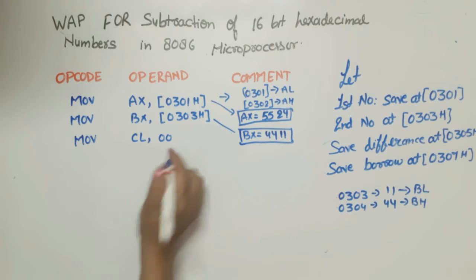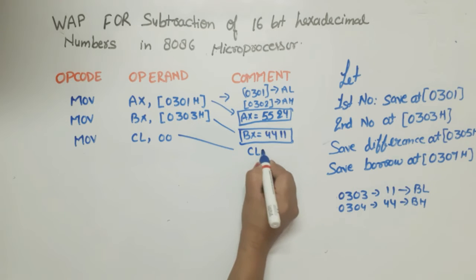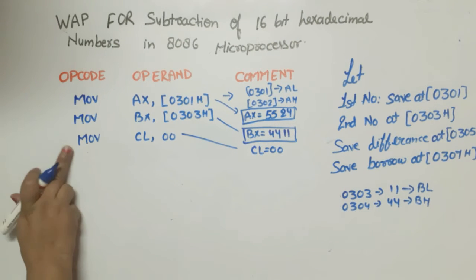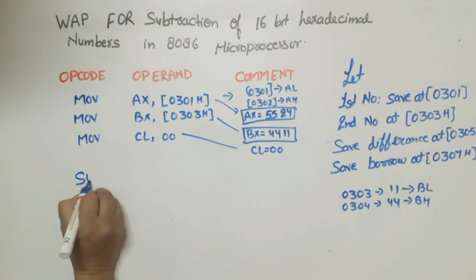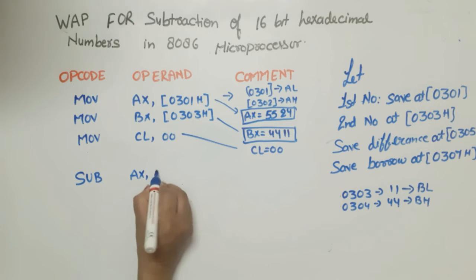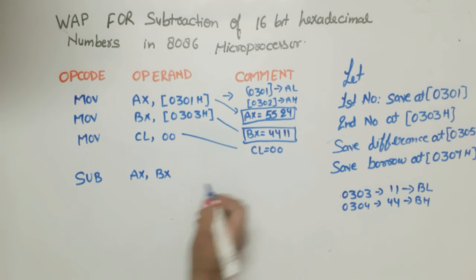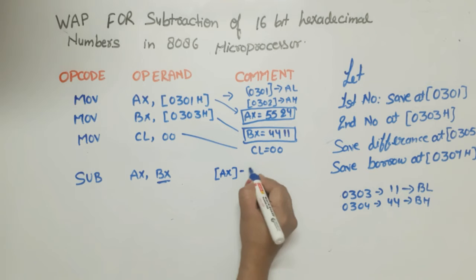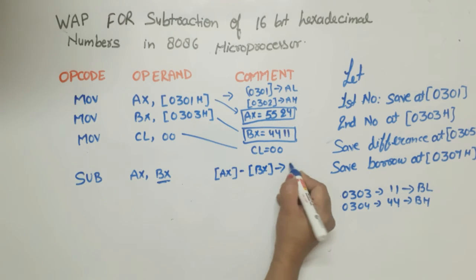Now when this line executes, CL means our carry register will be 0, clear. Now we do the operation. Now what operation do we have? We have SUB AX, BX. In this case what will happen? Content of BX will be subtracted from the content of AX and the result we will store in AX because AX is the destination register.